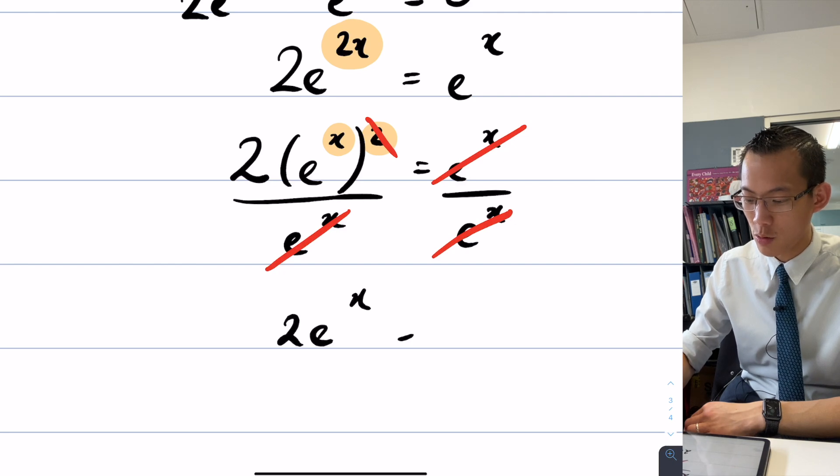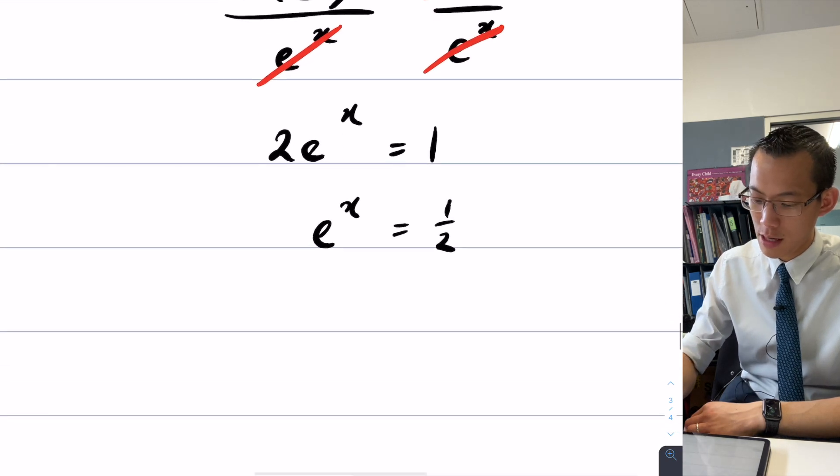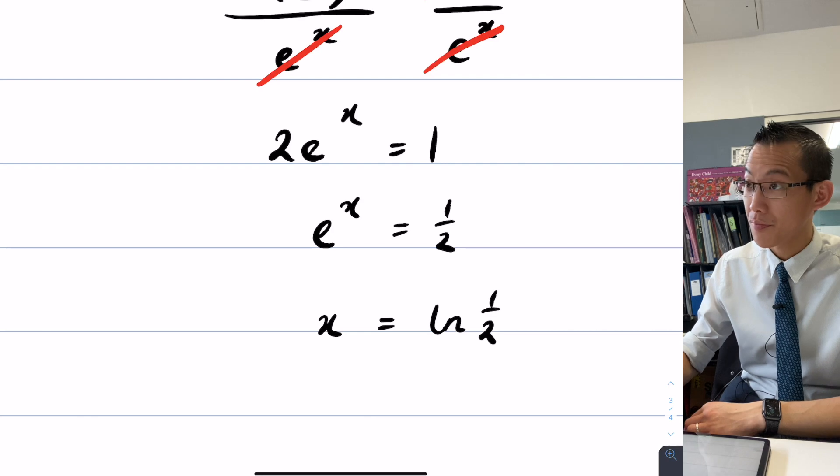This is 2e^x equals one, e^x equals a half. So this is x equals log of a half.